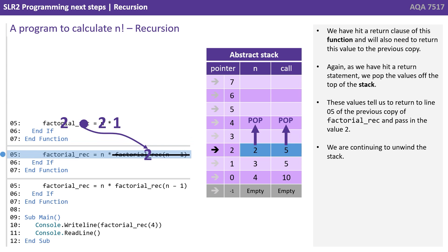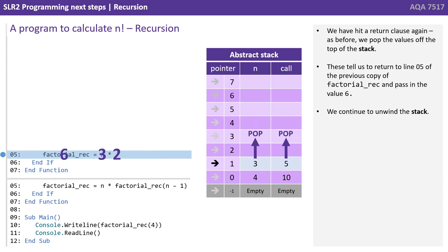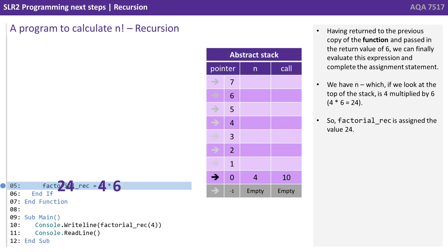Having returned to the previous copy and passed in the return value 2, we can finally evaluate this expression. We have n — which, looking at the top of the stack, is 3 — multiplied by 2. 3 times 2 is 6, so factorial_rec is assigned the value 6. We've hit a return clause again and pop the values at the top of the stack. These tell us to return to line 5 of the previous copy of factorial_rec and pass in the value 6. We can finally evaluate this expression: n — which is 4 at the top of the stack — multiplied by 6. 4 times 6 is 24, so factorial_rec is assigned the value 24.